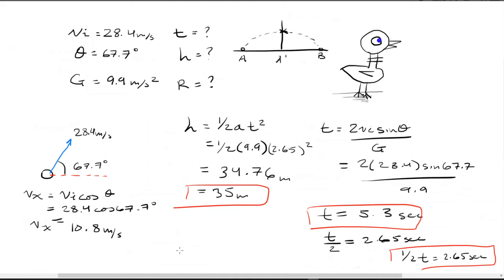So there's the velocity in the X, and now we can plug it into our range equation using VXT. So 10.8, and the T that we're going to use is going to be this T right here, the 5.3, since we're calculating the distance from A to B using the range. That's going to be equal to 57.2 meters, or you could just round up to 57.